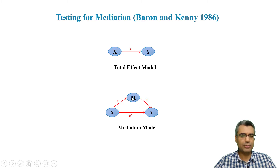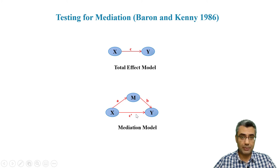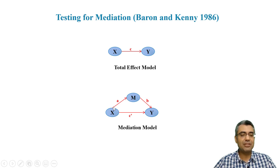This is just like regression. One regression has M as the dependent variable and X as the independent variable. Another regression has Y as the dependent variable with M and X as independent variables. We check the results: if a is significant and b is significant, we say we have a mediation. The last step is to check c prime. If c prime is still significant, we call this partial mediation, because the effect of X on Y partially goes through M.